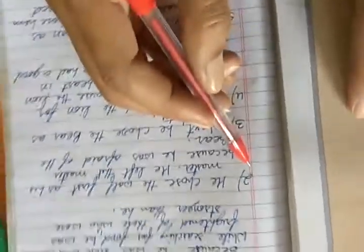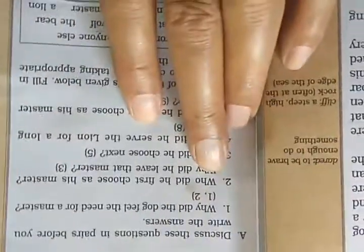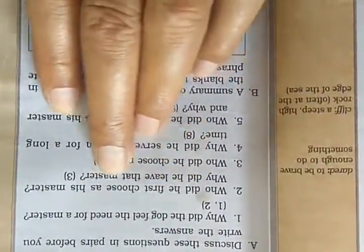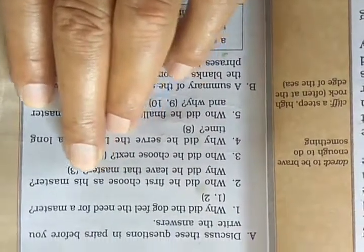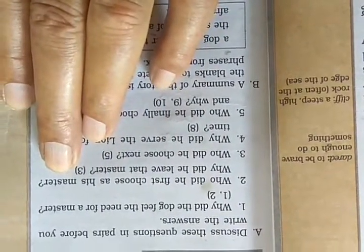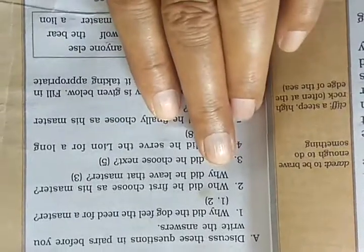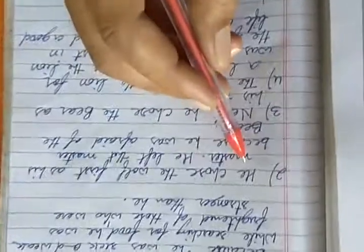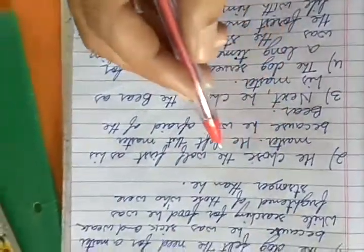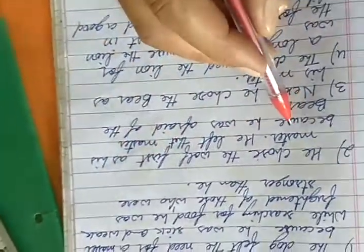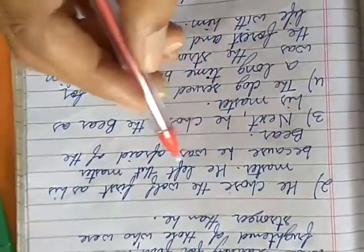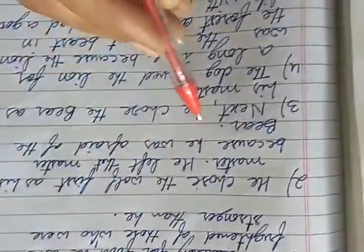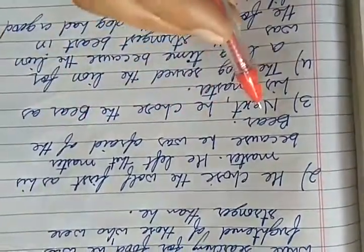Question number 2. Question is, who did he first choose as his master? And the second part of this question is, why did he leave that master? We all know that he chose the wolf first as his master. He left that master because he was afraid of the bear.